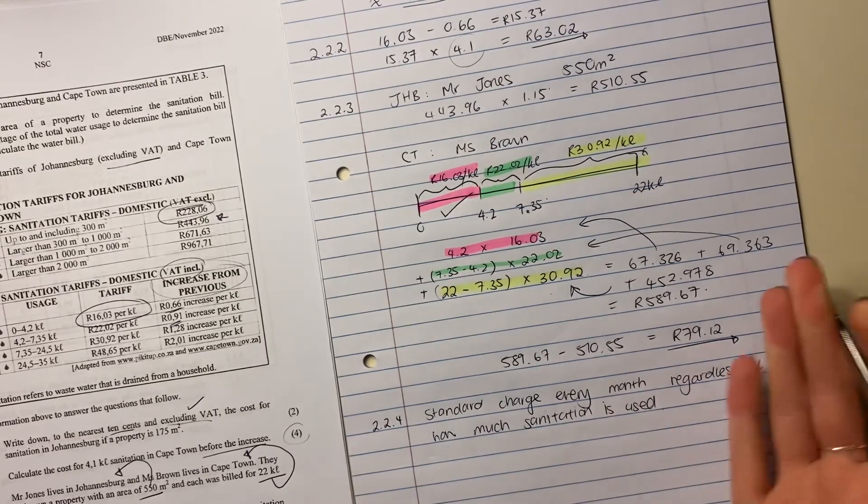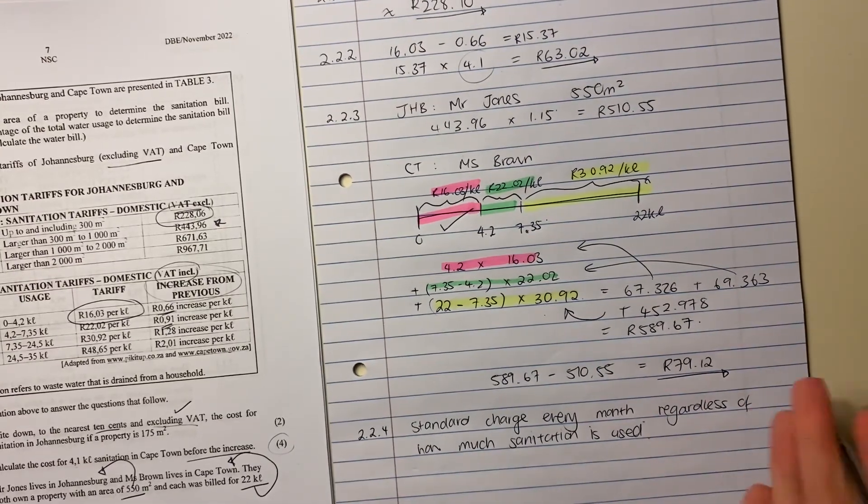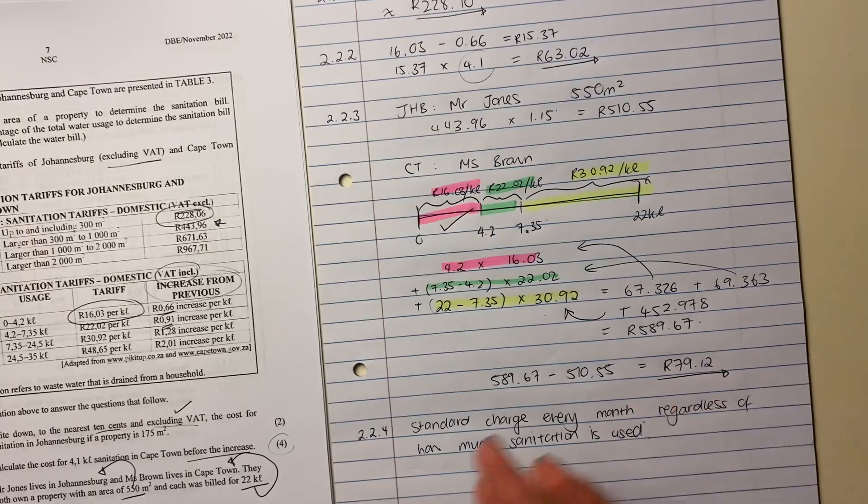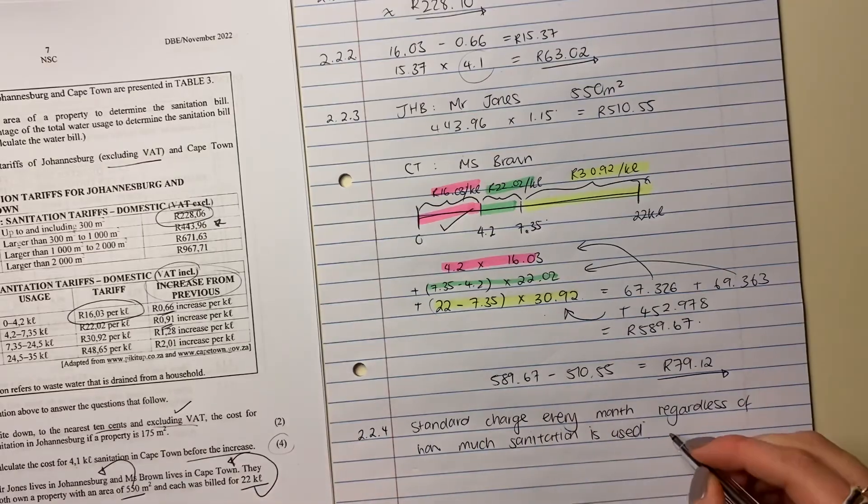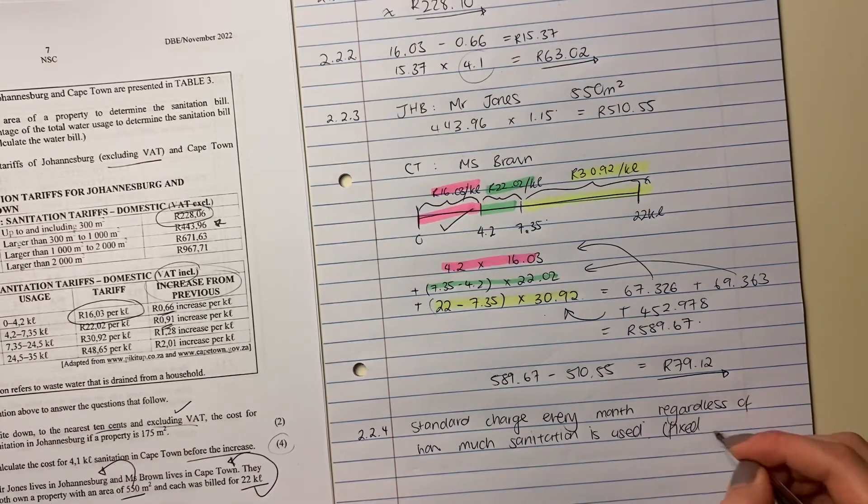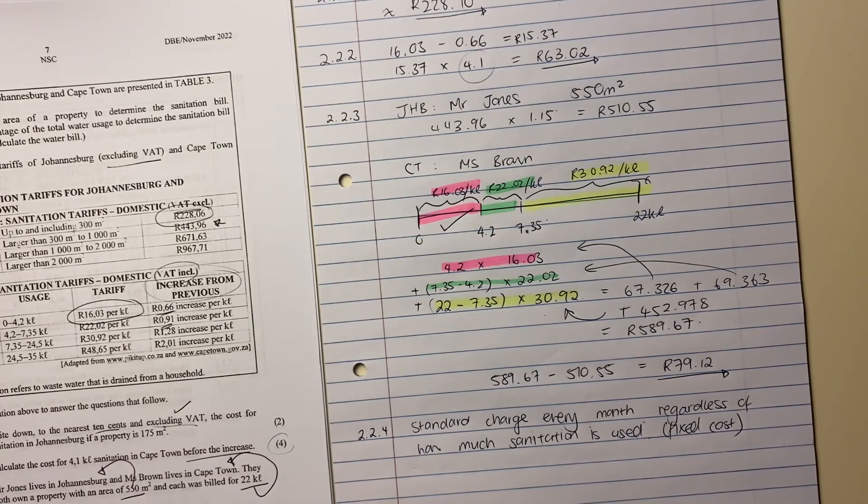It's also quite useful for budgeting purposes because it means that whenever you put this into your budget, you always know it's going to be the same amount, which is quite nice. Whereas in Cape Town, if you use more, you're paying more, et cetera. So it's like a variable cost where this is a fixed cost effectively. This is a fixed cost. And if you remember from break even, this should be something that you're familiar with. That's us done with this question. Let's move on to question three.